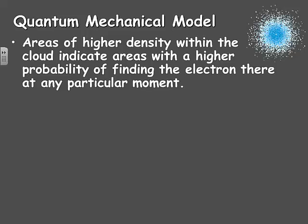Now, to make diagrams easier to understand, the boundaries within which electrons are likely to be found 90% of the time are frequently used. They're referred to as atomic orbitals, and they can be of different shapes and sizes depending upon the energies possessed by the electrons occupying them.